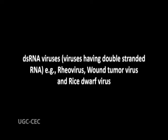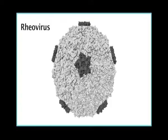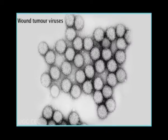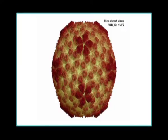They are the viruses with double-stranded RNA. The best examples are reovirus, wound tumor virus, and rice dwarf virus.